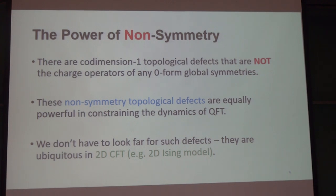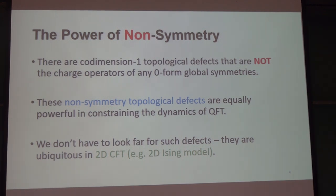So how do you classify things that are non-symmetry? That would be part of the main point of the talk — how do you characterize all these topological defects? Whether or not they're protected, whether or not they're robust under renormalization group flows — these are all interesting questions, and I do have the answers to all of that.